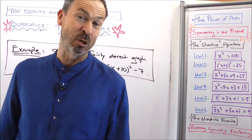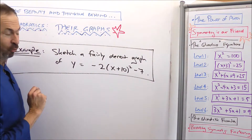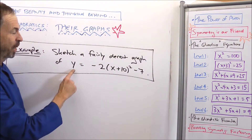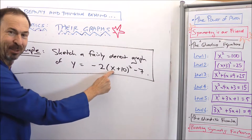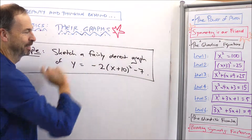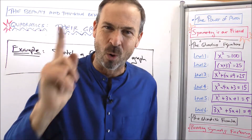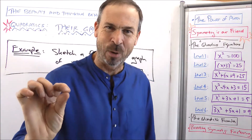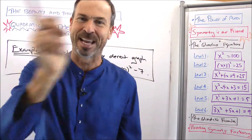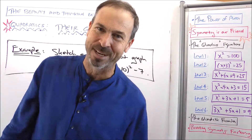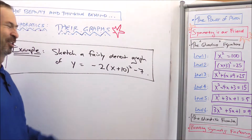Practice question for you. Can you sketch a fairly decent graph of the equation y equals negative 2 times x plus 10 squared minus 7? It's really basically just a y equals x squared graph that's been moved and shifted around. Can you figure out what that movement is and draw a fairly decent graph of it? Give it a try.